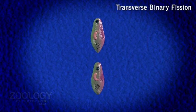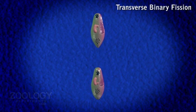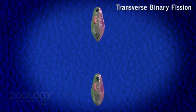Of the two daughter paramecia, the anterior one is called proter and the posterior is called opisthe.